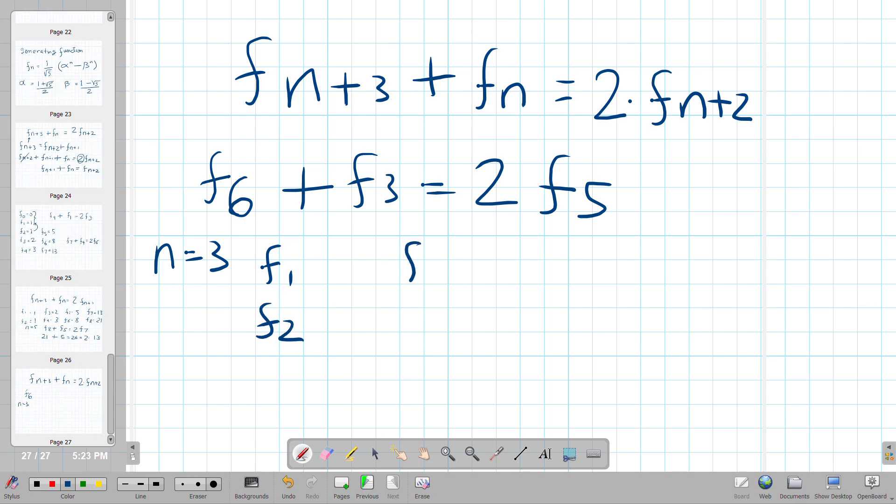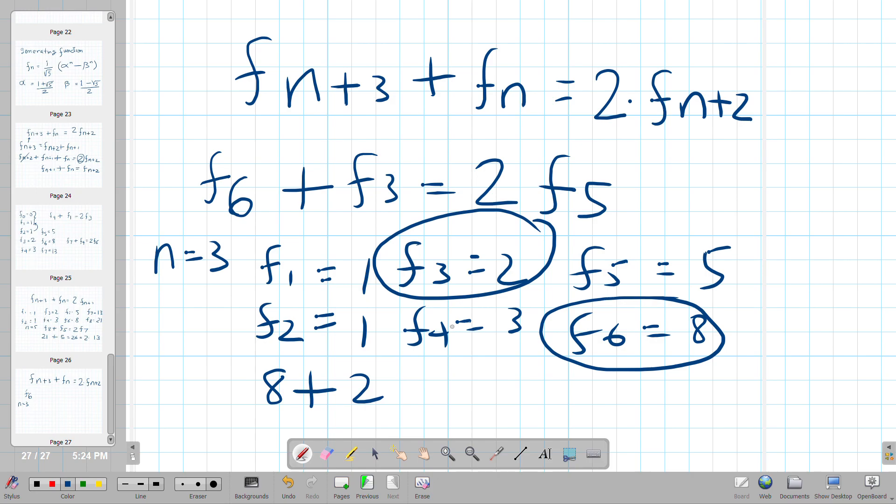Okay? Let's go, let's work this out again. So it was one, one, two, three, five and eight. So what do we have here? We have eight plus two is equal to two times five. Indeed, it is ten.